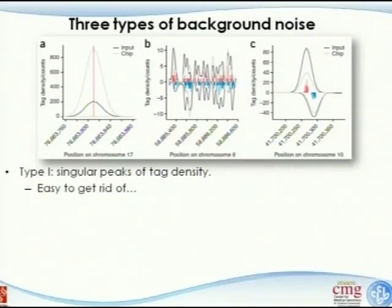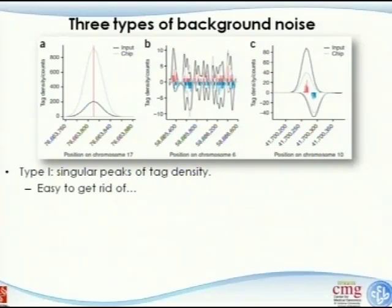There are a couple of different types of background noise. This is a paper by Peter Park's group at Harvard. There are actually two lines in this figure: one is the dark black line, which is the input sample, and another is a faint line, which is the ChIP-enriched sample. The first type of variation is a singular peak of tag density. Their conclusion is this type is pretty easy to get rid of — you see enrichment in the ChIP and also in the input samples, suggesting this region has something weird going on.